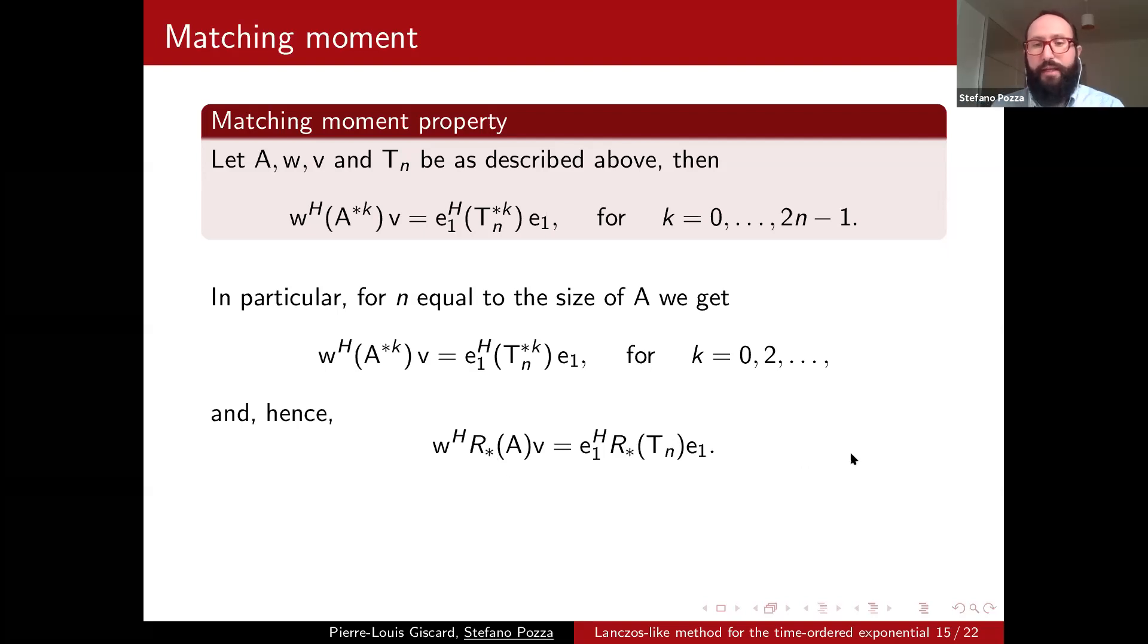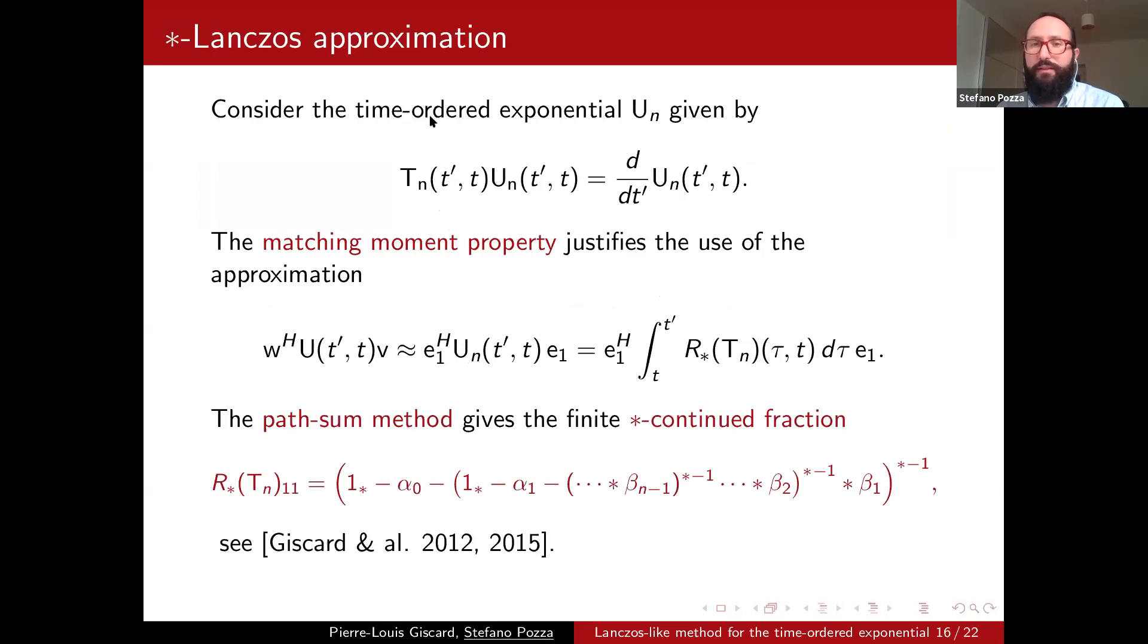So we have an expression for A, but why are we doing that? I'll try to say it again. So T now has the same size of A, but now T is tridiagonal. So if we solve our initial problem with the matrix T instead of the matrix A, we end up having an approximation of the time-ordered exponential that now is a star resolvent of TN. But now we can use the path-sum method on this tridiagonal matrix, thanks to its simple structure. And so, thanks to that, this can be written in a very simple fashion as a star continued fraction.